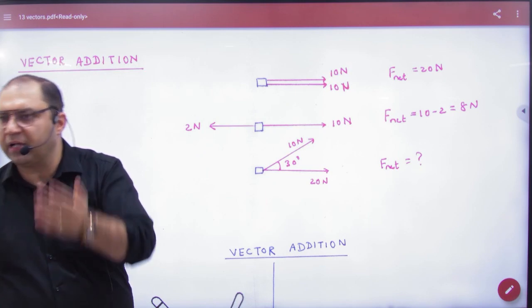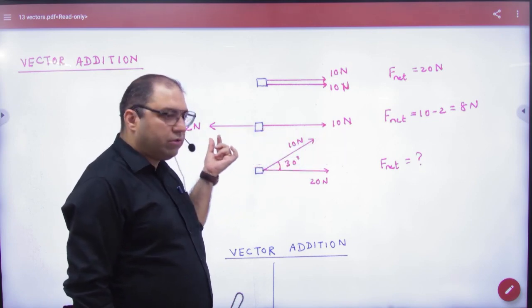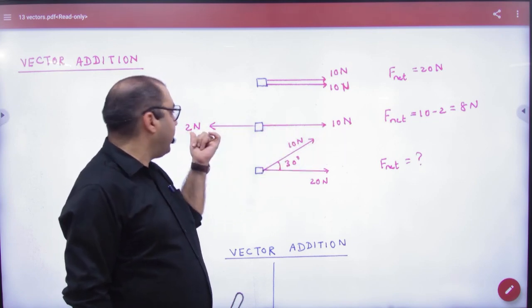20 newton towards the right. Next, one put 10, one put 20, one put 2. So how much net force?